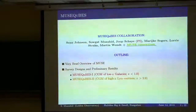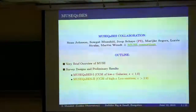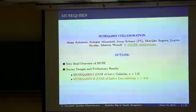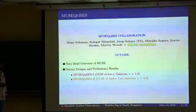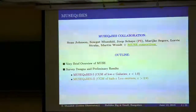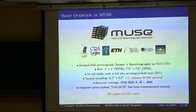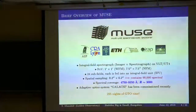The outline of my talk: I'll give a brief overview of MUSE, then describe the survey design and preliminary results for two surveys. MUSEQuBES-1 studies the circumgalactic medium of low-redshift galaxies (z < 1), and MUSEQuBES-2 studies the CGM of high-redshift galaxies identified by their Lyman-alpha emission.